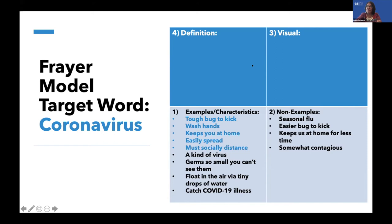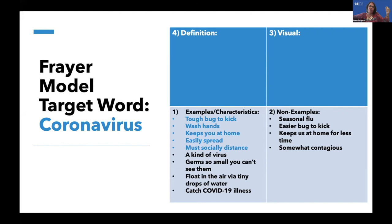When you know what a word is, you know what it is and what it isn't. Some of the non-examples: the seasonal flu is closely associated with coronavirus, but not quite it — it's not the same. Sometimes the non-examples are the opposite of the examples — so an easier bug to kick, whereas the coronavirus is really difficult to kick. It keeps us at home for less time when we have a cold or the flu — we might stay home one or two days, but certainly not the two weeks it takes to quarantine, or months to get over the entire illness. And it's somewhat contagious, as opposed to the coronavirus, which is very contagious.